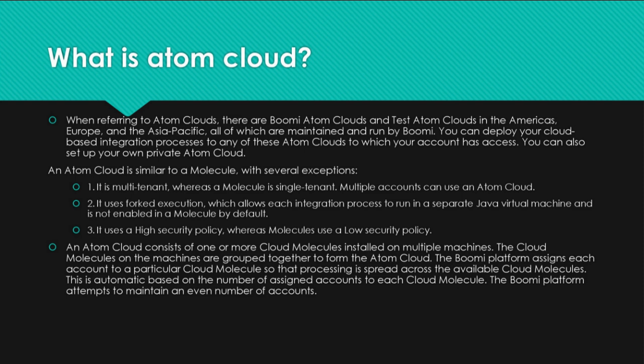An atom cloud consists of one or more cloud molecules installed on multiple machines. The cloud molecules on the machines are grouped together to form the atom cloud. The Bumi platform assigns each account to a particular cloud molecule so that processing is spread across the available cloud molecules automatically, based on the number of assigned accounts to each cloud molecule, attempting to maintain an even number of accounts.